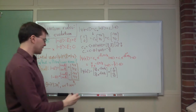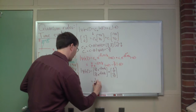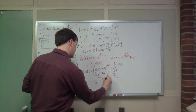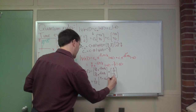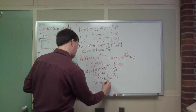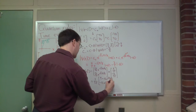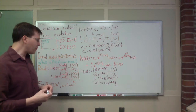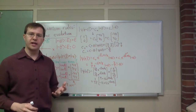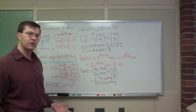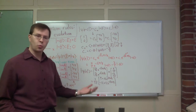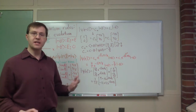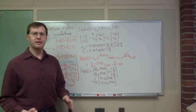I can factor out 1/25, giving a vector with top component 9 + 16e^{-iEt/ℏ} and bottom component -12 + 12e^{-iEt/ℏ}. I should check that this is reasonable. At t equals zero, the exponential is one, so the top is 9 + 16 = 25, and 25/25 = 1. The bottom is -12 + 12 = 0. So at t equals zero I get (1, 0), which is the plus z state — exactly what we wanted. That avoids the most common errors.